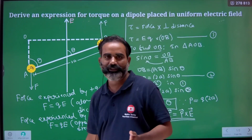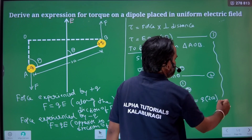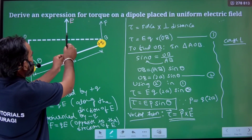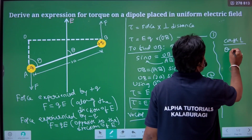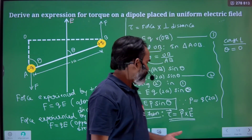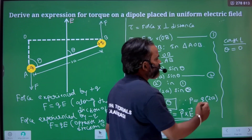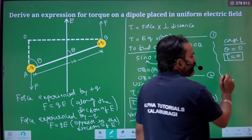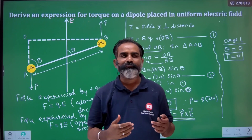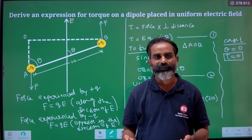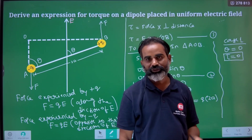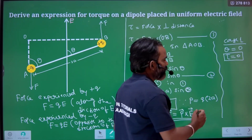Now let's look at special cases. Case 1: when the dipole is along the direction of E, that is when theta equals 0. Then tau equals pE sin 0 equals 0. So the torque is minimum — it is zero. This position is what we call stable equilibrium.